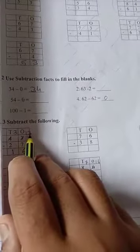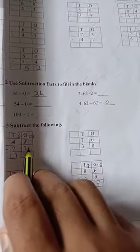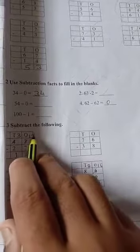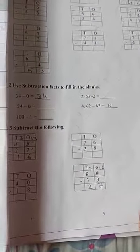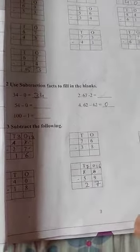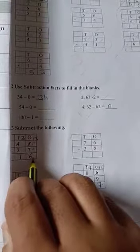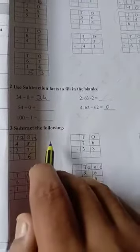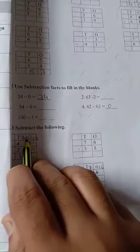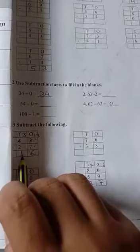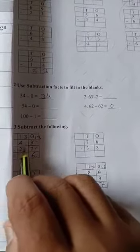Now 13 is bigger than 7, so subtraction is possible. So now 7 after till 13: 7 after 8, 9, 10, 11, 12, 13. We open 6 fingers. So answer is 6. This side 3 minus 2. 2 after till 3. So 2 after 3. We open only one finger. So answer is 1. So 43 minus 27, our answer is 16.